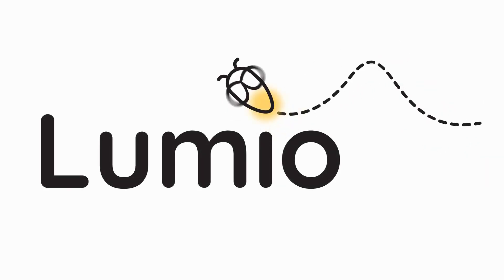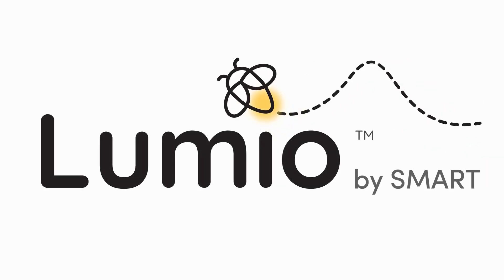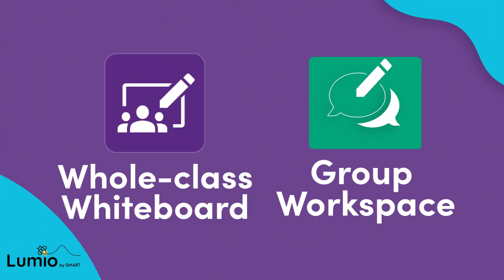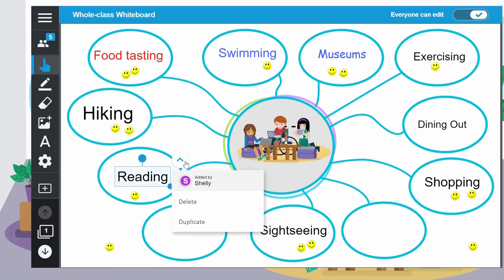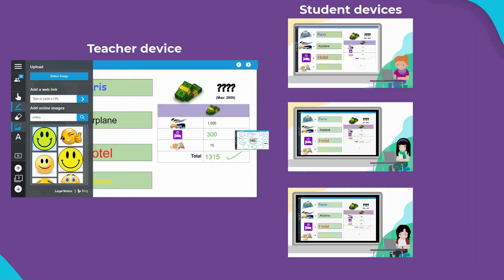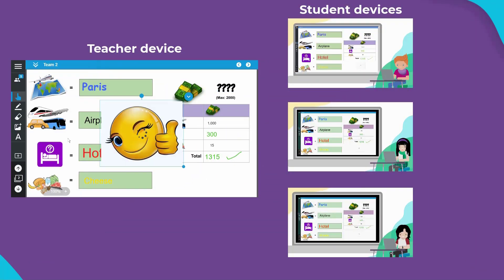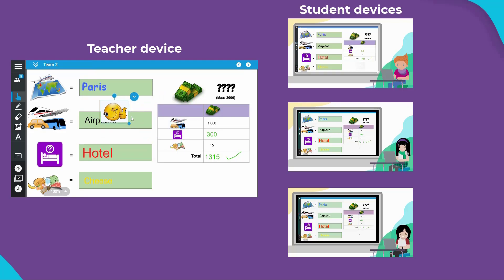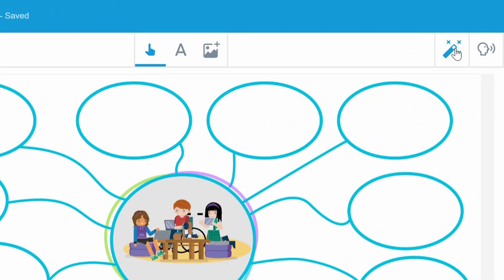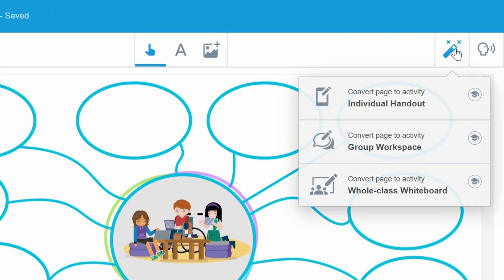Lumio is back once again with a new product update that takes collaborative workspaces to a whole new level. Looking to convert a page into an activity for students to work on? We've added two new tabs to give you more flexibility on how you can assign work to your students and support progress at every stage. Introducing whole class whiteboard and group workspace.